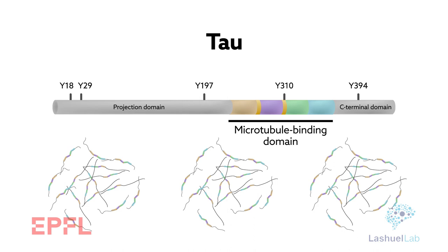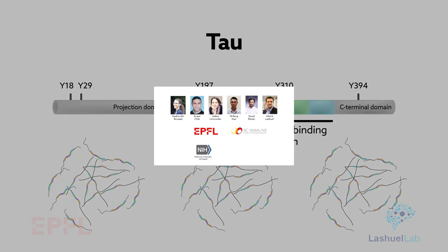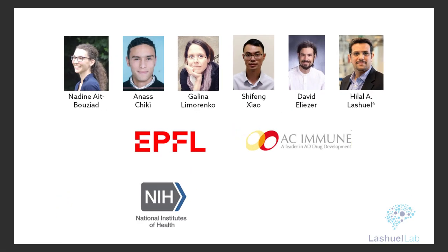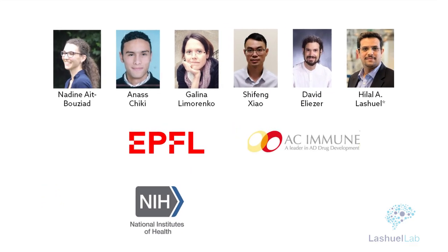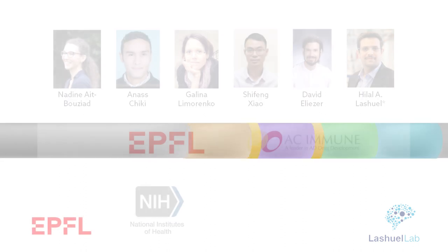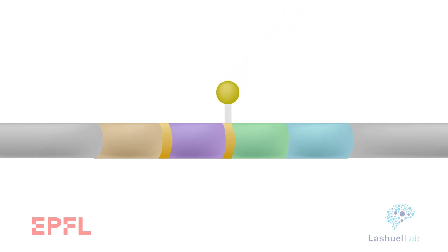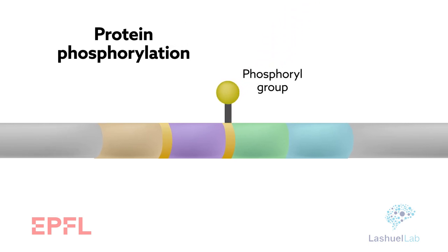Interestingly, however, few studies have explored its role in tau pathologies. To address this gap, researchers from the Laschel Laboratory at EPFL's Brain Mind Institute in Switzerland examined what happens when these tyrosines are altered by a post-translational modification known as protein phosphorylation.